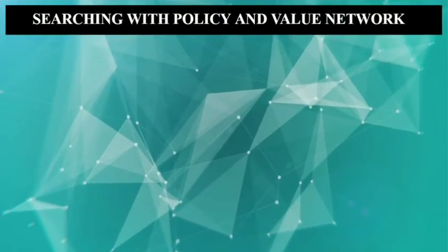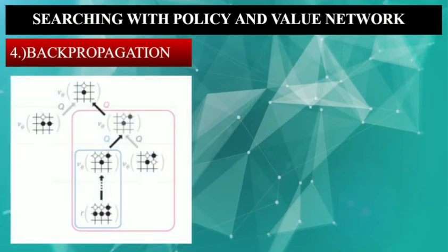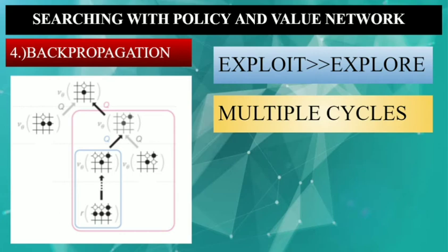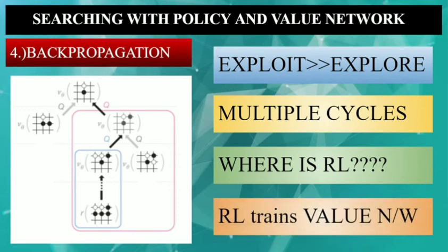The last step is Back Propagation. After we have evaluated our win or loss, we update the values, and once simulations are done, we exploit more rather than explore — that is, sticking to the best path. Hence, after multiple cycles, we are now capable of beating the master using AlphaGo. In this whole MCTS scenario, we use SL Policy Network for exploration, Value Network for exploitation, and Rollout Policy for simulation. The RL Network was used to train the Value Network, which was an important aspect of exploitation.